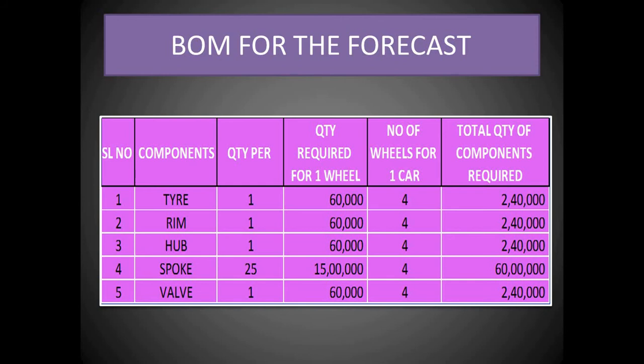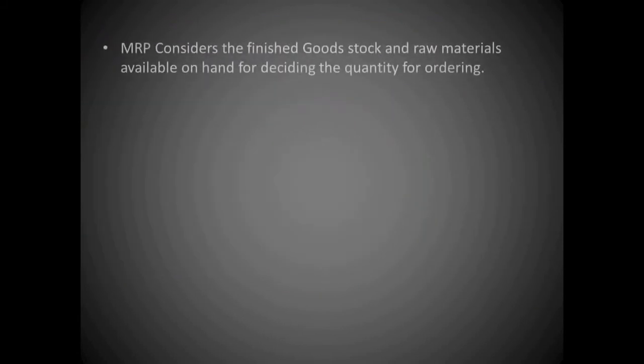The components are tire, rim, hub, spoke, and valve. Quantity per we already decided. The quantity required for one wheel will be 60,000 tires, rim, hub, valve, and spoke as it is 25 per wheel. For one car, we consist of four tires, so it is multiplied by four.